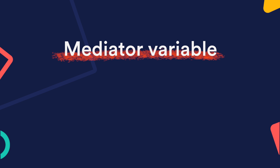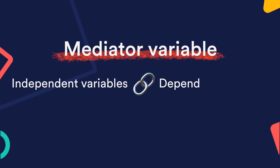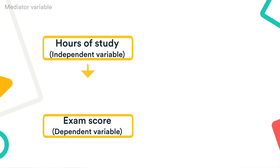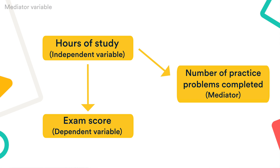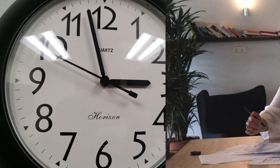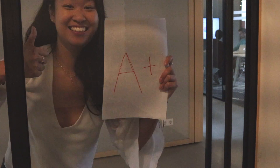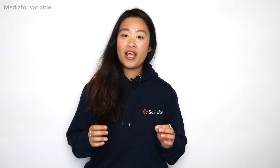A mediating variable is a variable that links the independent and dependent variables, helping explain how or why the independent variable affects the dependent variable. For example, hours of study impacts the variable number of practice problems completed, which in turn impacts the exam score. The more hours a student studies, the more practice problems they will complete, and the more practice problems completed, the higher the student's exam score will be. By adding the mediating variable of number of practice problems completed, we help explain the cause and effect relationship between the two main variables.